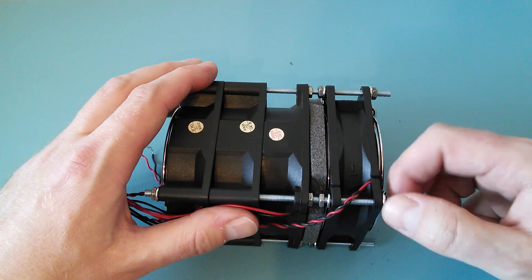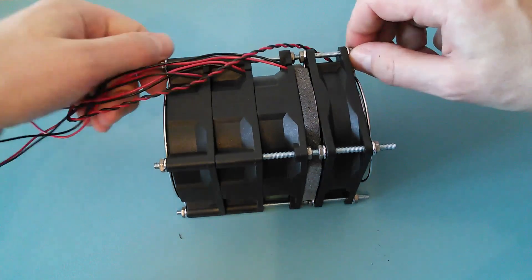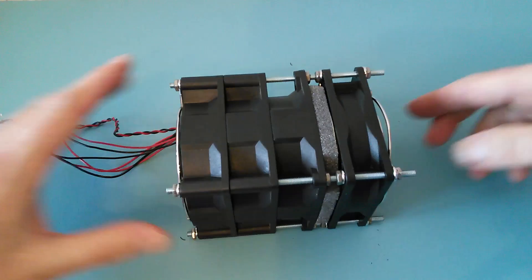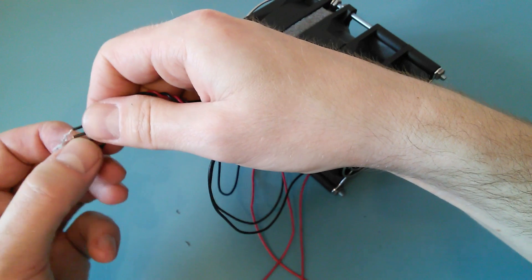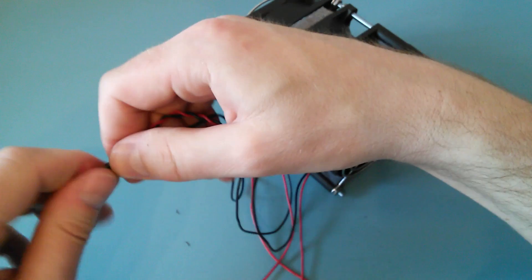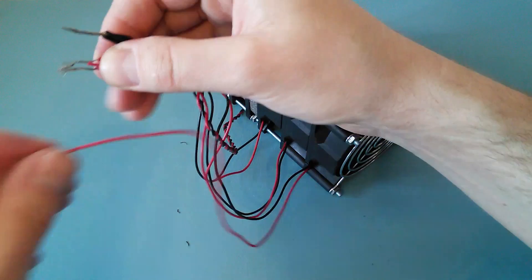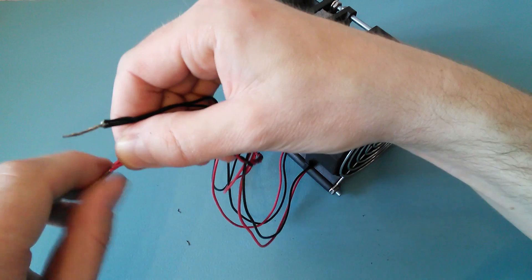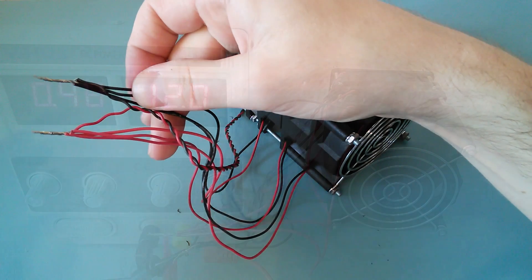I'll use this one. Twist all black wires into one strand, and all red wires into another strand. Your new fume extractor is ready.